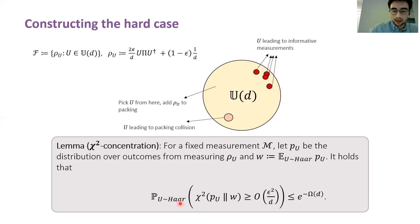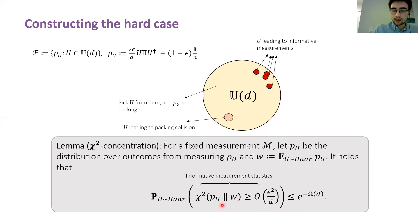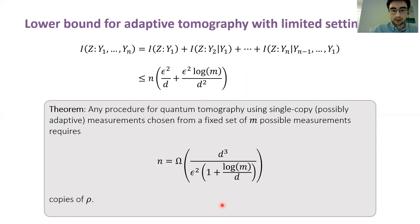More specifically, we derive a lemma on the concentration of the chi-squared divergence. For a fixed measurement M, letting P_U be the distribution over outcomes from measuring the state, and W be shorthand for the marginal distribution, the following holds: the probability of selecting a unitary operator such that the chi-squared divergence term is large is exponentially small in d. Roughly speaking, this corresponds to the probability of picking a unitary operator that leads to informative measurement statistics. This leads to an upper bound on each mutual information term.